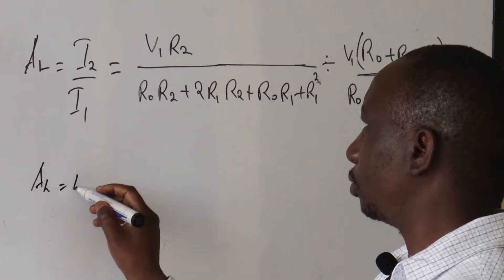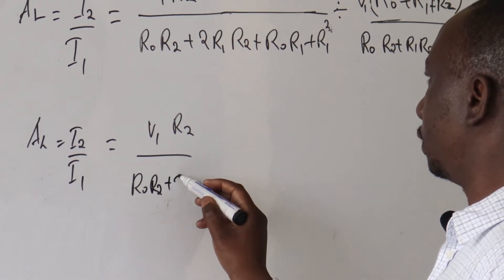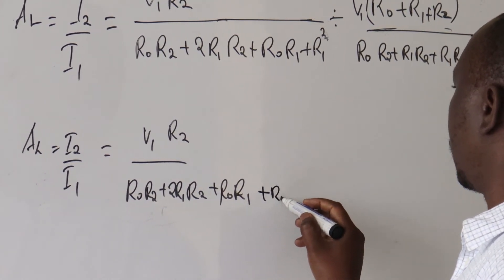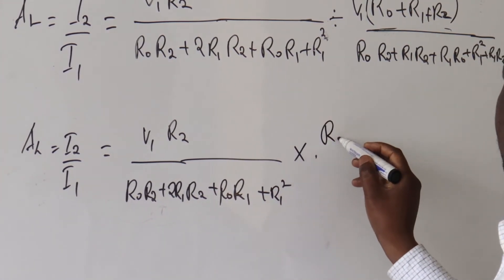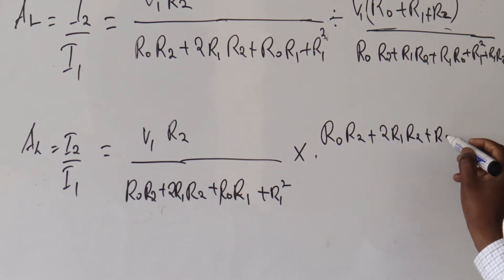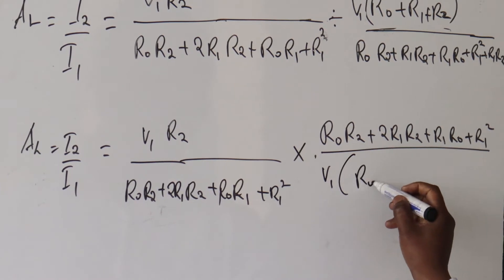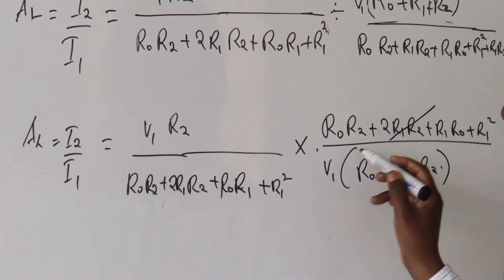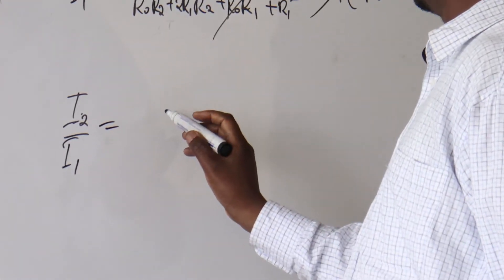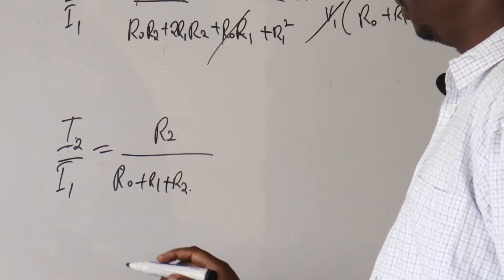After simplification, AL equals I2 over I1. The V1 and the denominator terms cancel out, and we remain with R2 over (RO + R1 + R2). So the insertion loss AL is R2 divided by (RO + R1 + R2).